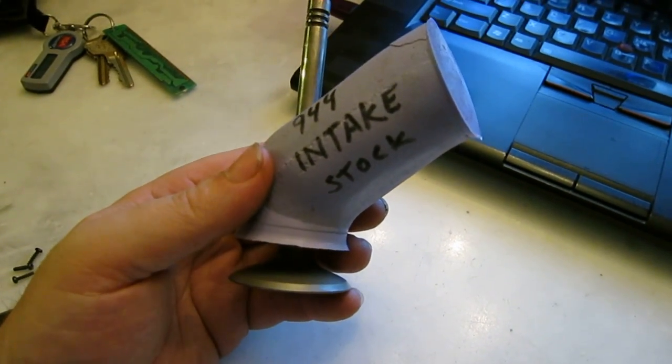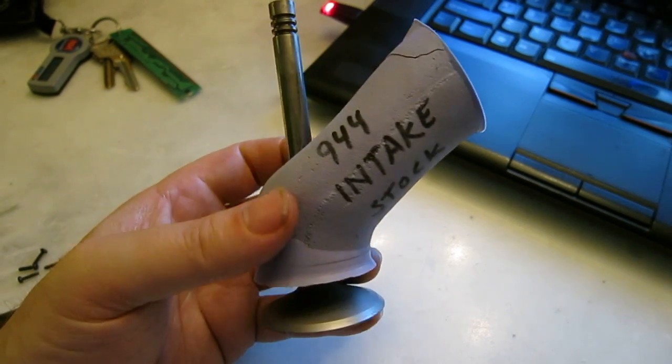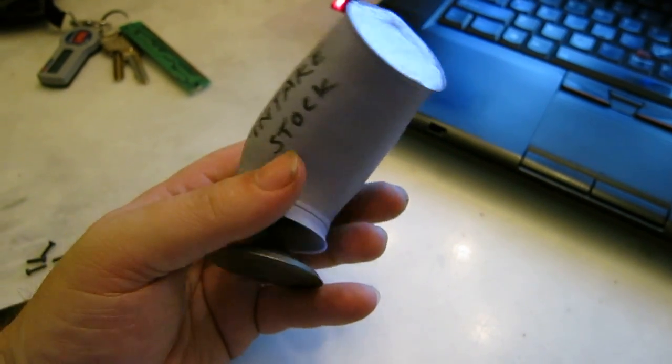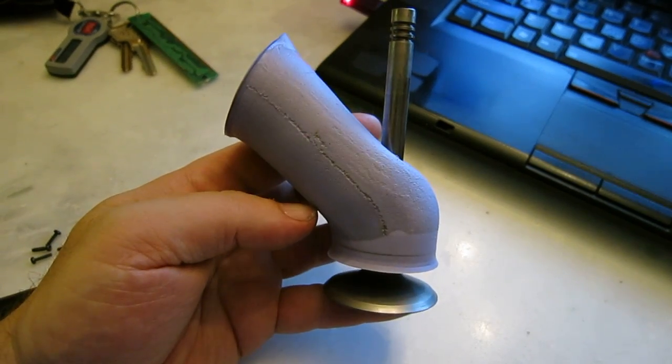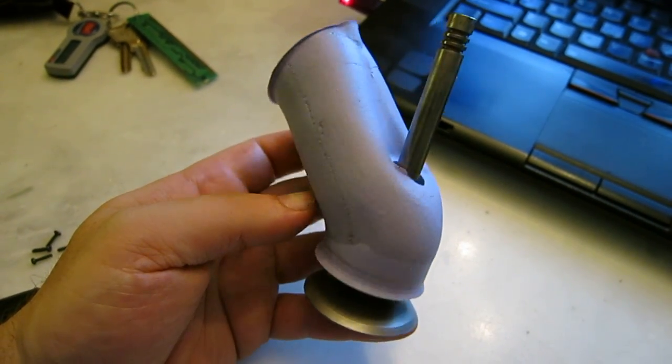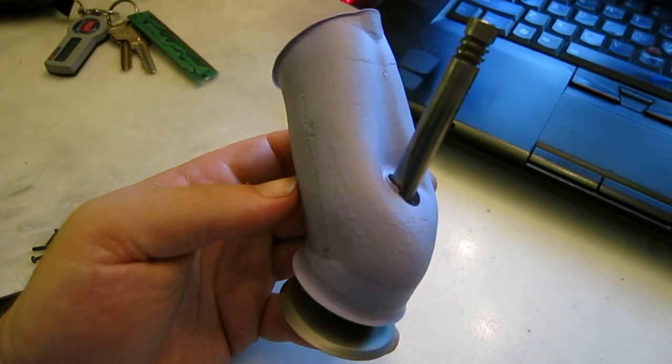What I have here is a rubber mold I've taken of an intake port on a head. Stock 944 8-valve head. It was kind of an interesting process.